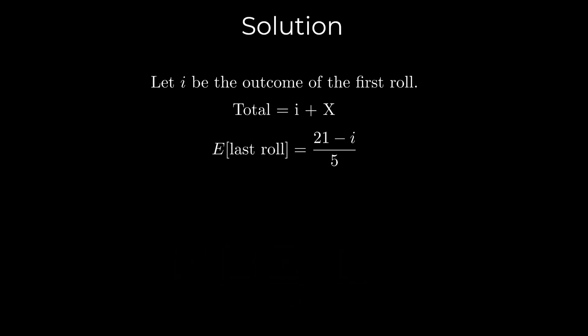Now, after getting i on the first roll, there are two possibilities. We either roll i and continue or we roll a different value and stop. So we get the following equation.